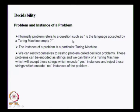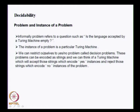Informally, a problem refers to a question such as: is the language accepted by a Turing machine empty? Or something like: does a graph have a Hamiltonian circuit? An instance of the problem is, in the first case, a particular Turing machine, and when you consider the Hamiltonian path problem, the instance is a graph. We shall restrict ourselves to problems where the answer is only yes or no — we call them yes-or-no problems or decision problems.